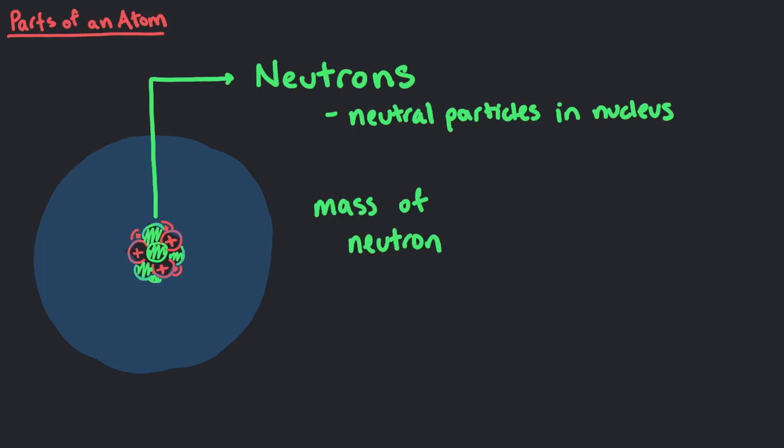While the mass of a neutron is very slightly larger than that of a proton, in general we consider neutrons and protons to have the same mass. Each proton or neutron contributes one atomic mass unit, 1u, to the mass of the atom.